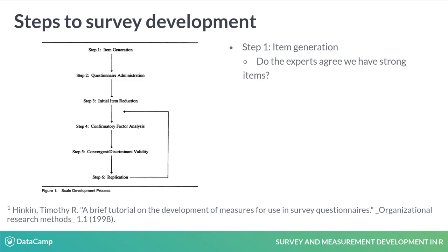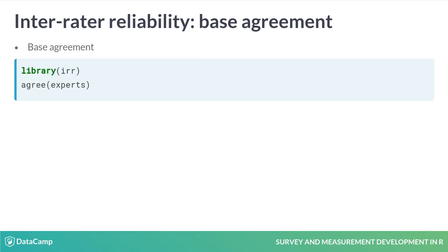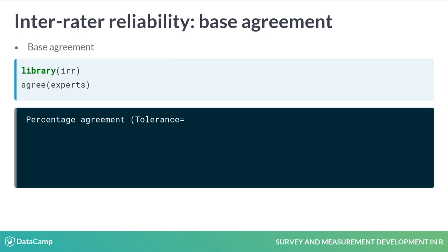Collecting data from busy consumers is difficult, so before we ask for their attention, we want to assess the strength of our items. To do this, we'll enlist the opinions of subject matter experts. The first item generation diagnostic we'll look at is inter-rater reliability. There are several ways to do this. We could take a raw percentage agreement — let's do that using the agree function from the package IRR. We have 50% raw agreement between the two raters. Not great, but there seems to be some shared basic understanding.